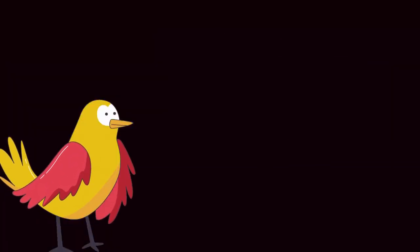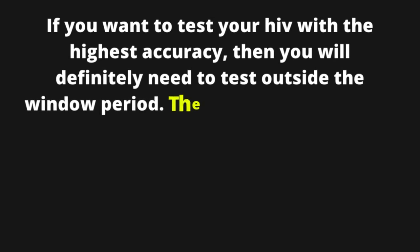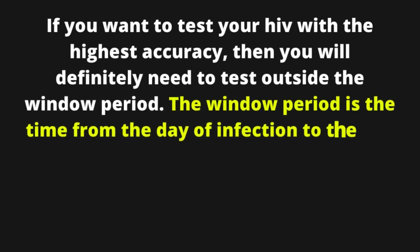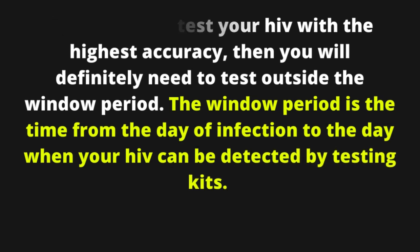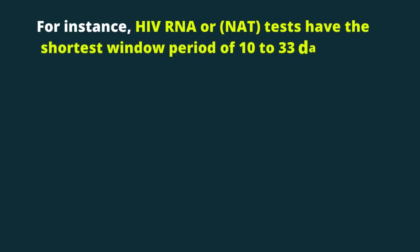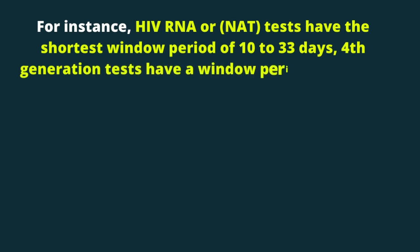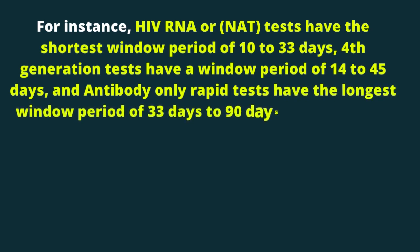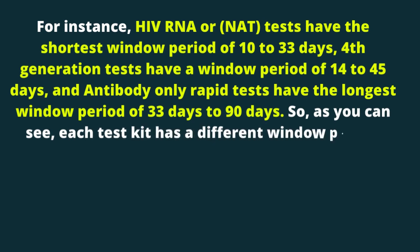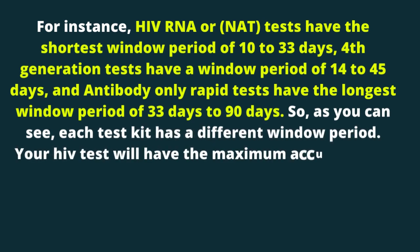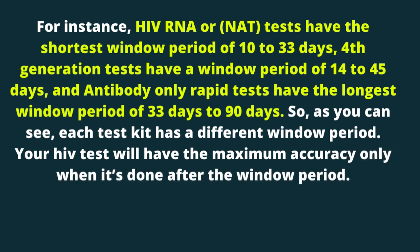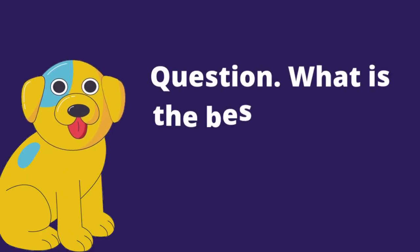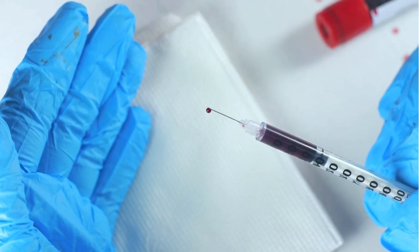Question: What is the current HIV window period? If you want to test for HIV with the highest accuracy, you will need to test outside the window period. The window period is the time from the day of infection to the day when your HIV can be detected by testing kits. HIV RNA or NAT tests have the shortest window period of 10 to 33 days. Fourth generation tests have a window period of 14 to 45 days. Antibody-only rapid tests have the longest window period of 33 days to 90 days. Each test kit has a different window period, and your HIV test will have maximum accuracy only when done after the window period.